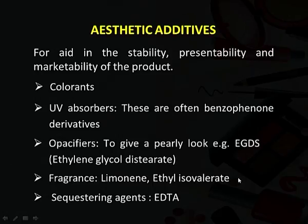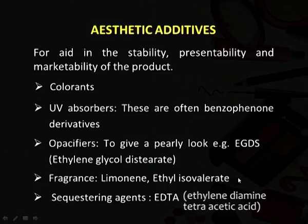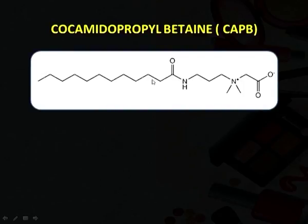Some sequestering agents are added. One common sequestering agent is EDTA, ethylene diamine tetra-acetic acid, which forms chelates with the calcium or magnesium ions present in hard water, so shampoos can be used in hard water also. Then cocamidopropyl betaine is one detergent used as a secondary detergent. As mentioned, secondary detergents are added to boost foam and also to make the shampoo slightly thicker.